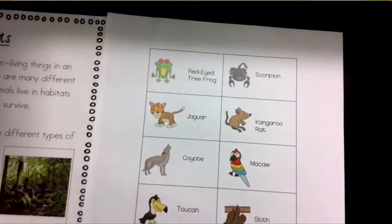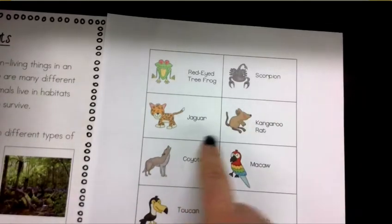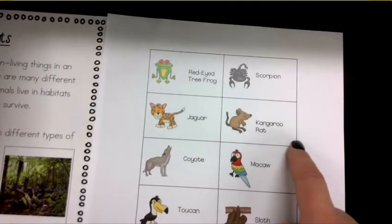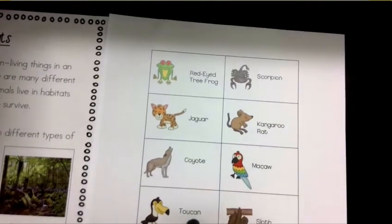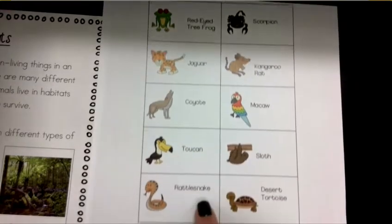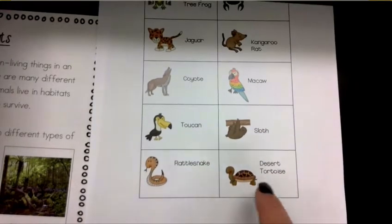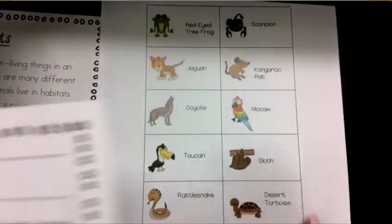The animals listed are: red-eyed tree frog, scorpion, jaguar, kangaroo rat, coyote, macaw, toucan, sloth, rattlesnake, and desert tortoise.